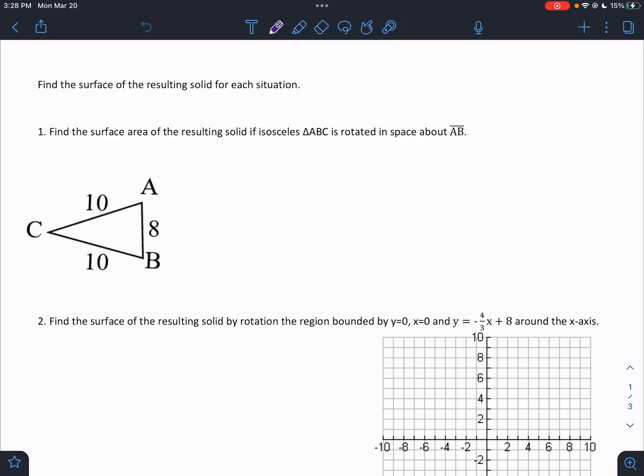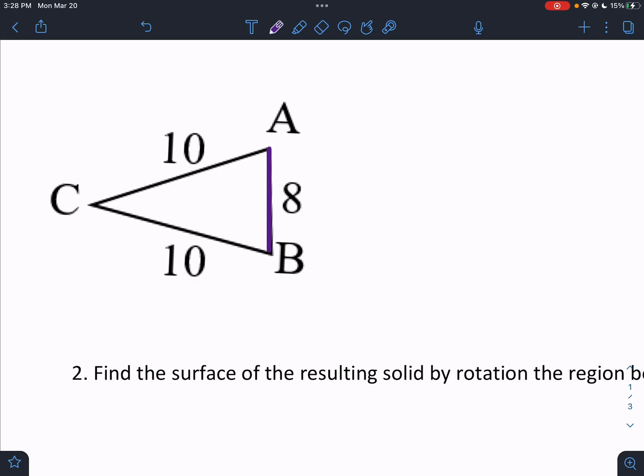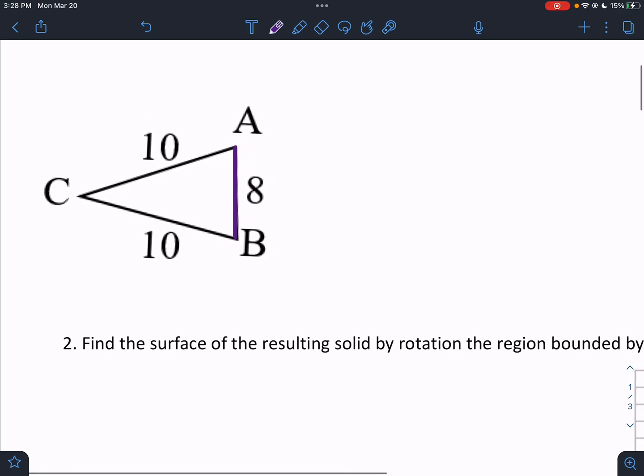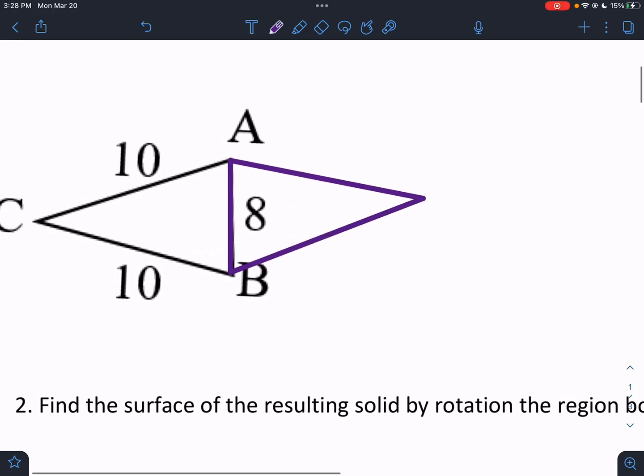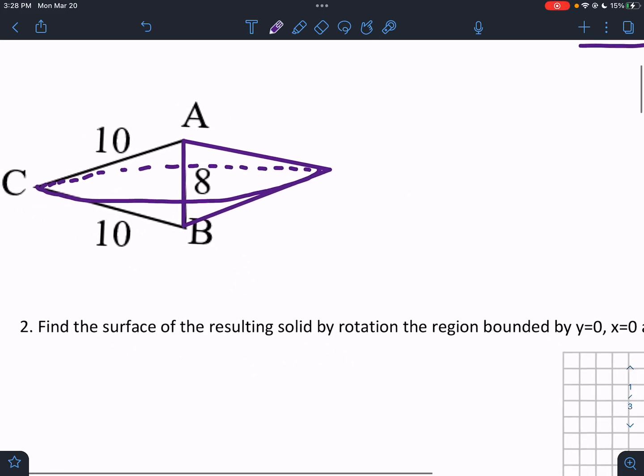Alright. So what do we have here? We're rotating it about the side AB. So here's the side AB. You have to be able to picture what's going on. Now, we're going to – this is what we do. We draw the reflection of the shape. So it would be over here. And we connect the vertices with a circular motion. It doesn't have to be perfect.